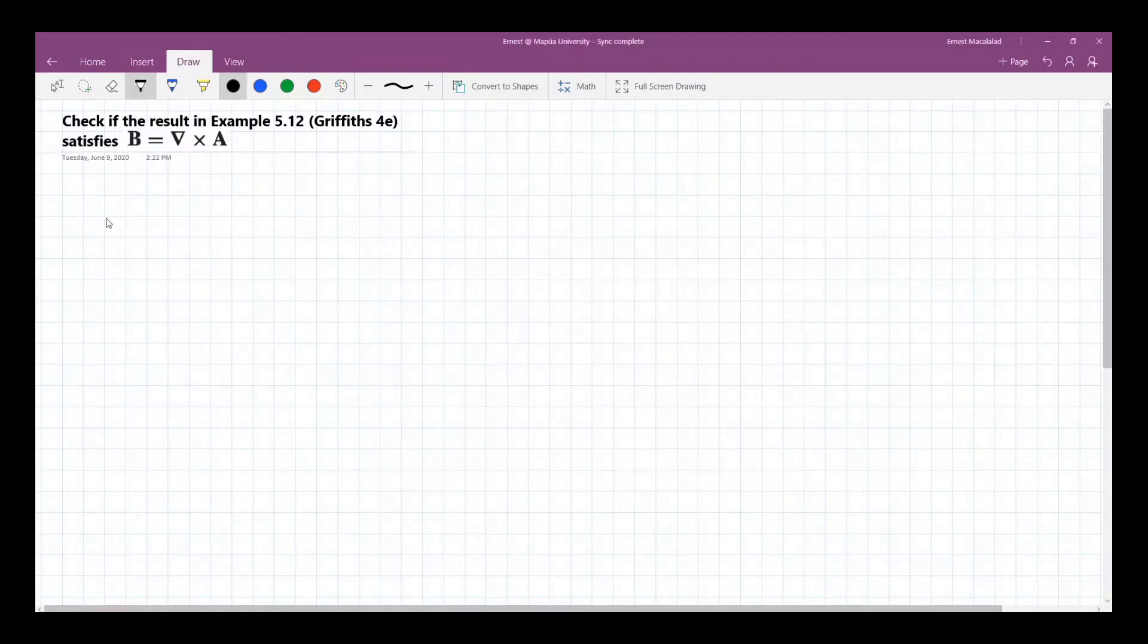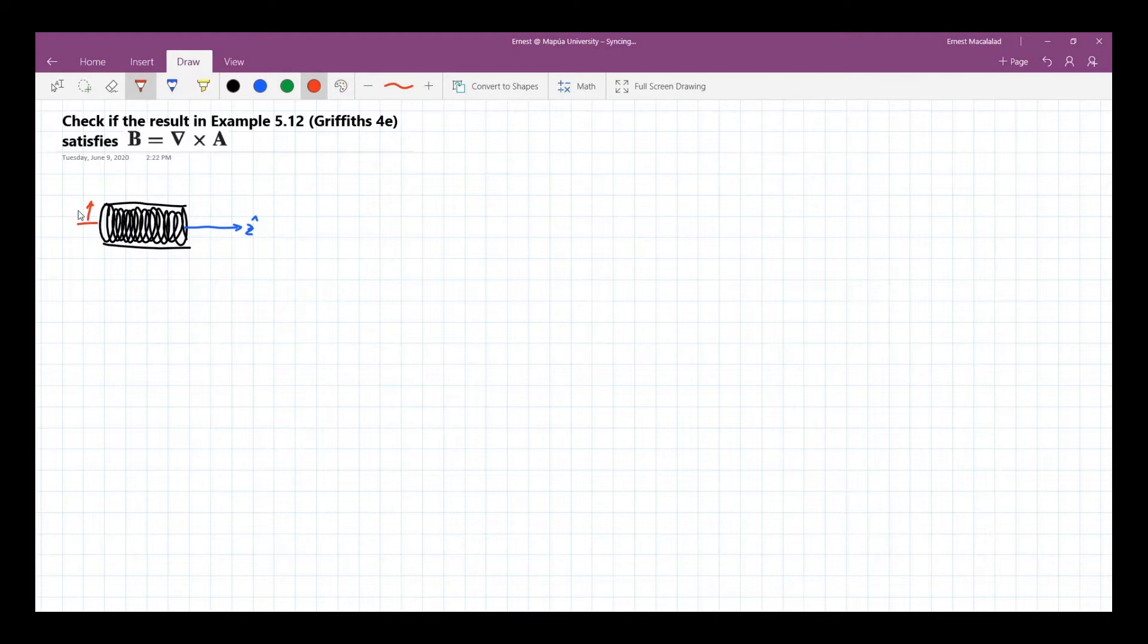As mentioned here, if this is your solenoid, we set this direction to be our z direction. And this will be the radius of the solenoid, and you have n turns per unit length.